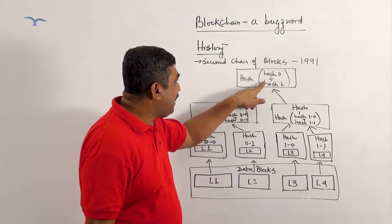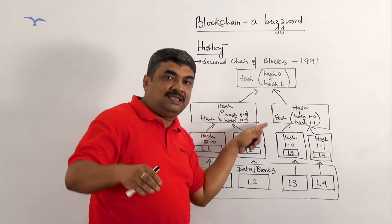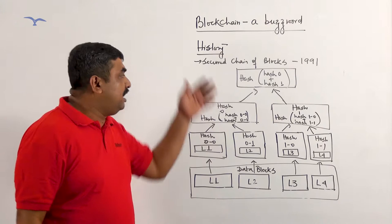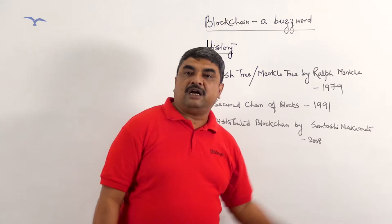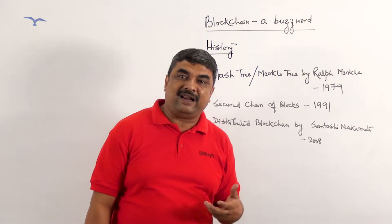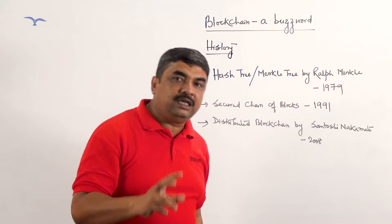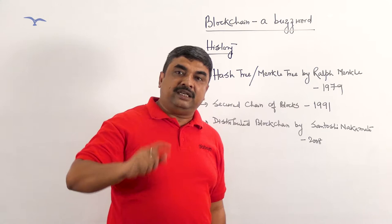Hence, I can say the topmost block of this hierarchy contains the history of all these data blocks which are present in this chain. After that, in the year 2008, Santoshi Nakamoto came up with a concept called distributed blockchain, where he eliminated the central authority of the entire blockchain and renamed it as distributed blockchain.